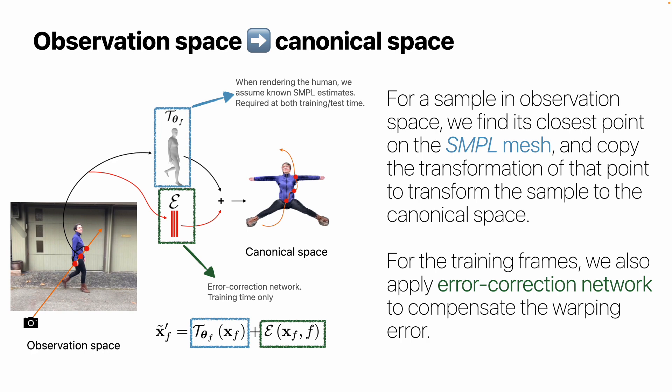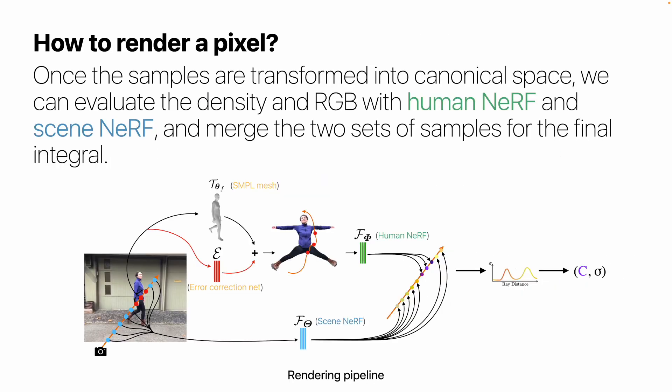Since our human NeRF model is static, to compensate the dynamics of the clothing and the articulation beyond the SMPL expressiveness, for the training frames we also apply an error correction network to offset those warping errors, as shown in the green boxes. Once the samples are transformed into the canonical space, we evaluate the density and RGB color using the human NeRF and scene NeRF, and merge the two sets of samples for the volume integral.